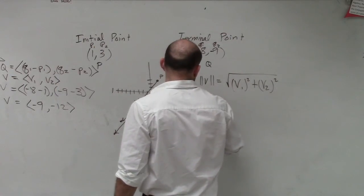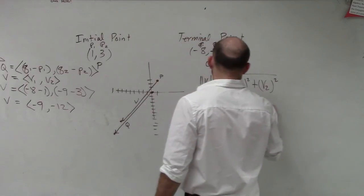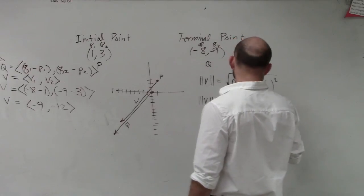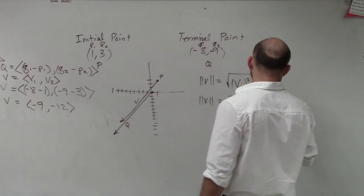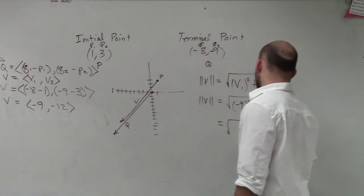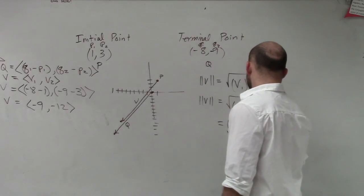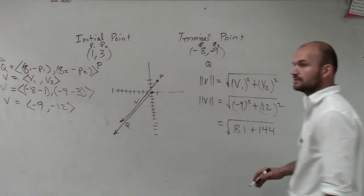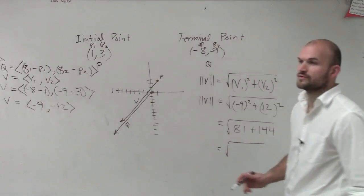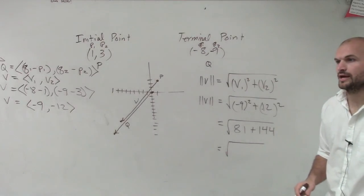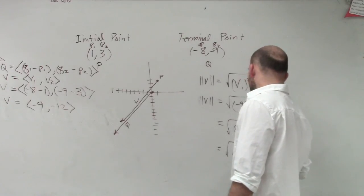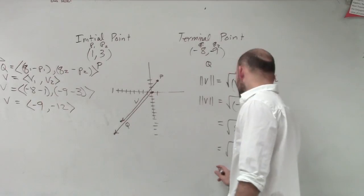So the magnitude of my V is going to equal negative 9 squared plus negative 12 squared. That doesn't really matter, you're right. So therefore, I get 81 plus 144, which then equals the square root of 225, which the square root of 225 is going to equal 15.